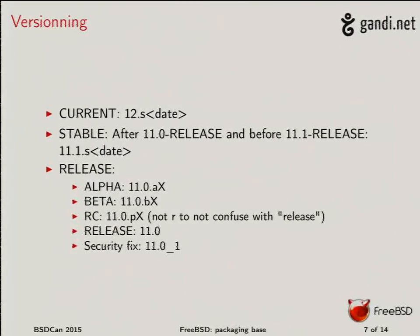So how do we do versioning? If we're splitting packages, we need proper versioning. The version, even for components like OpenSSL and Sendmail, will represent the FreeBSD version and not the upstream version — because we may have patched them, and we want users to know which FreeBSD version shipped this. When tracking -current (current is version 12 in this plan, targeting release for 11.0), we'll have the major version, 'S' for snapshot, and the build date.